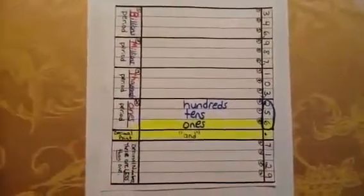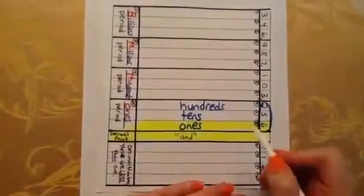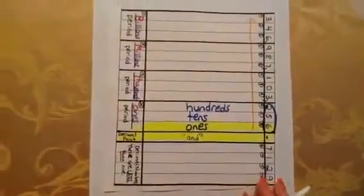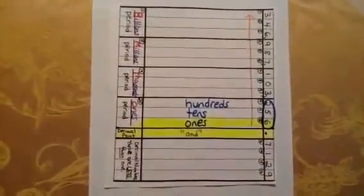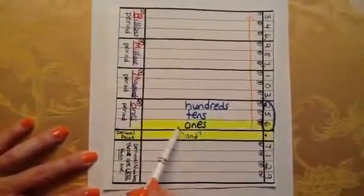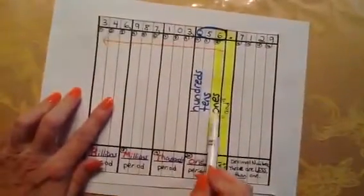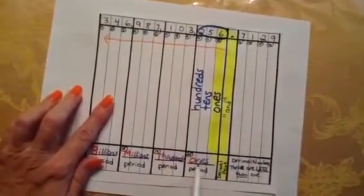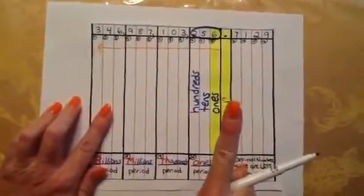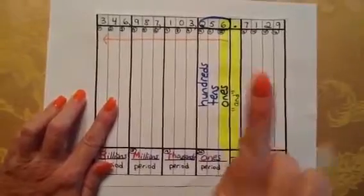Once I do that, I fill in the rest of my whole numbers — whole numbers go from the decimal in this direction and follow the pattern. Just like ones, tens, hundreds, the very first column on the right-hand side is the name of the period. This is the ones period, so that's the ones column. There's only one one, so you wouldn't say 'one ones' or 'ten ones' — you simply say ones. So we have ones, tens, hundreds.